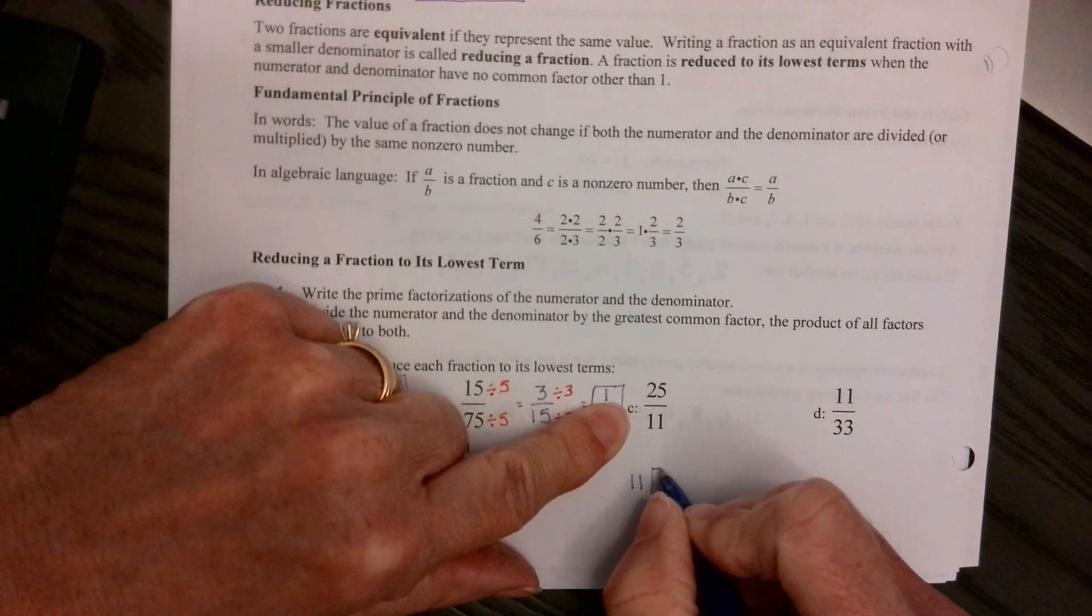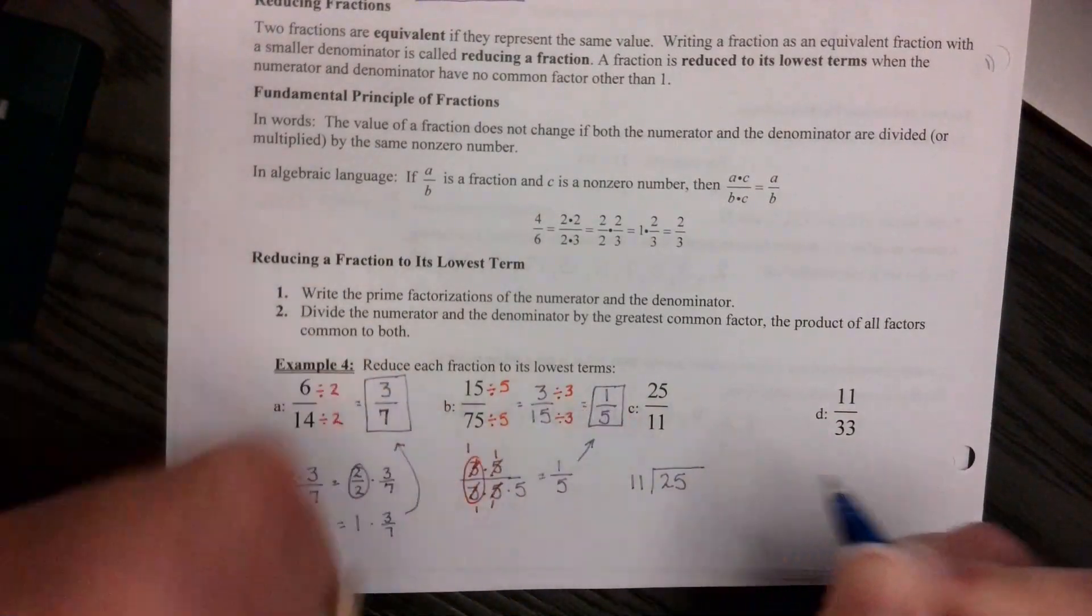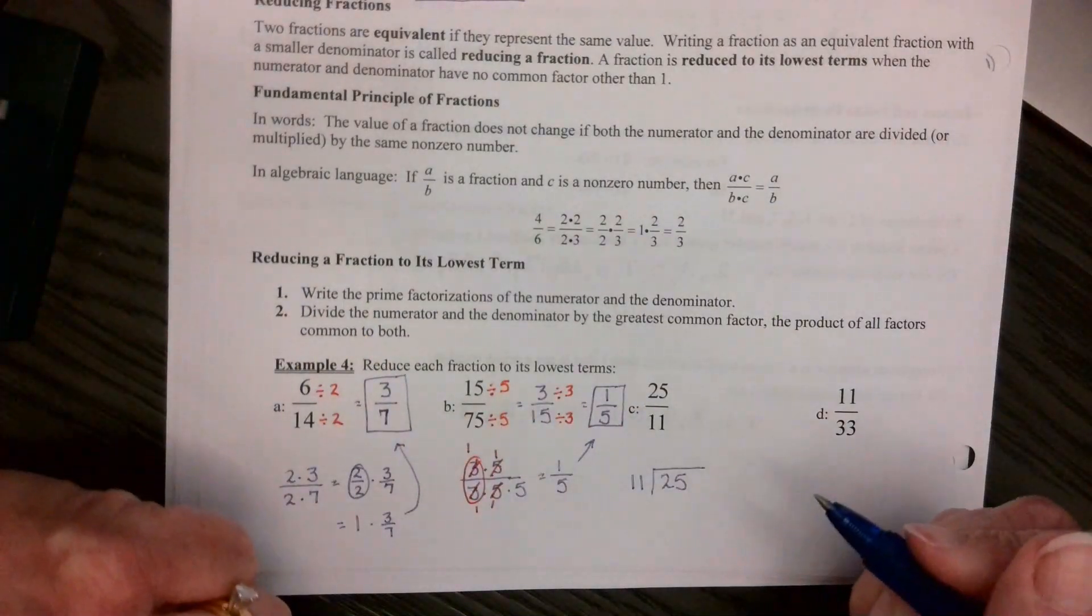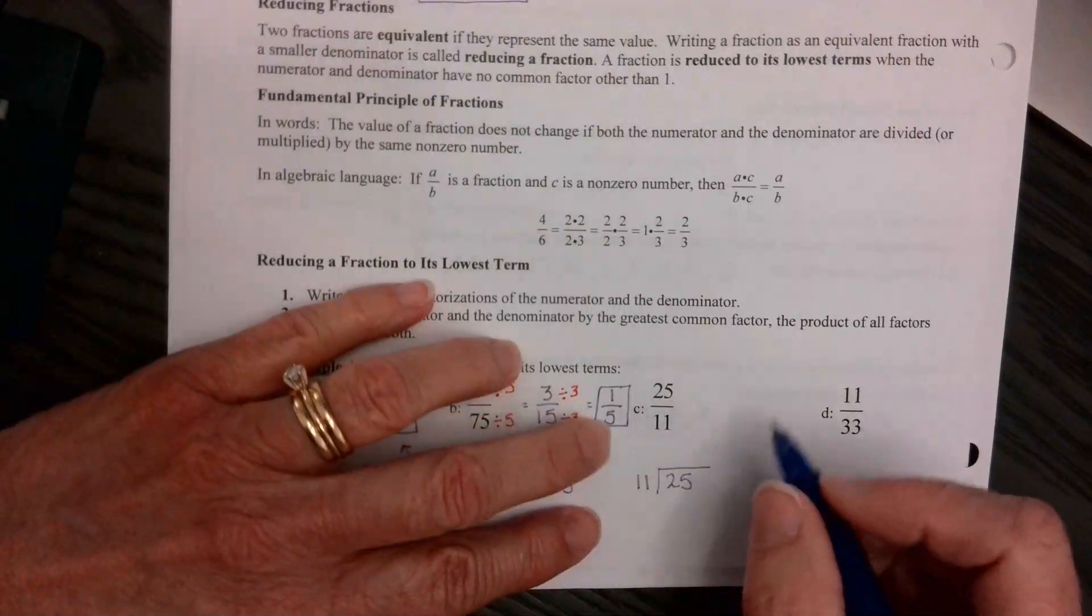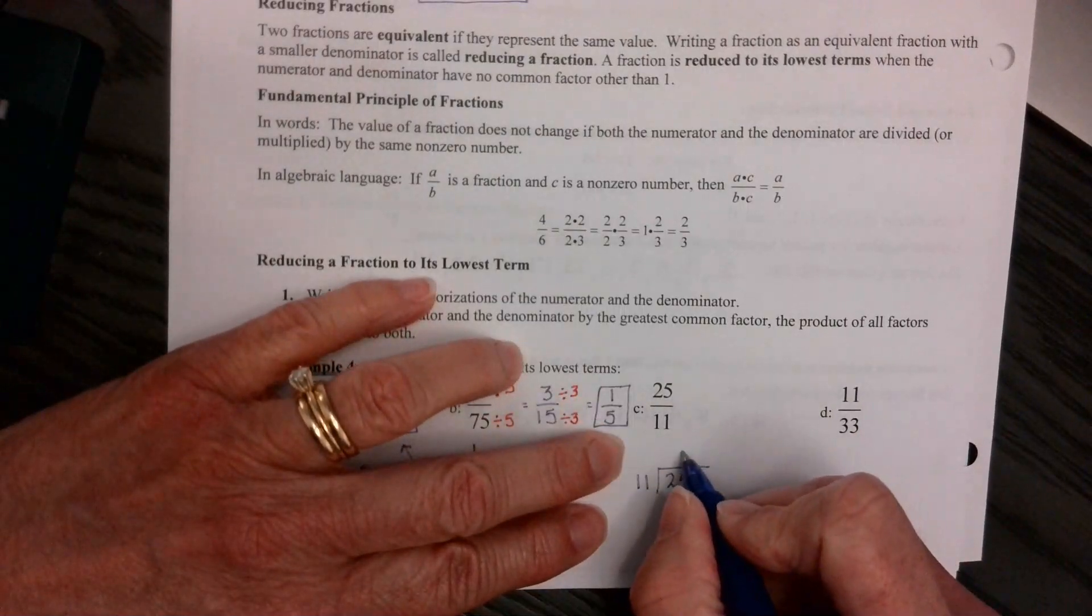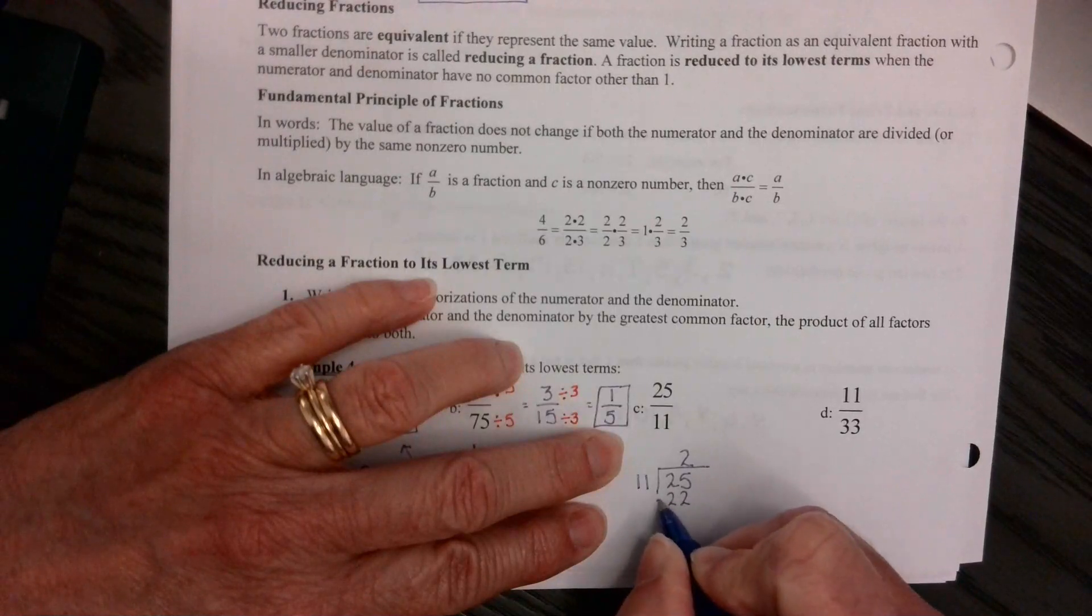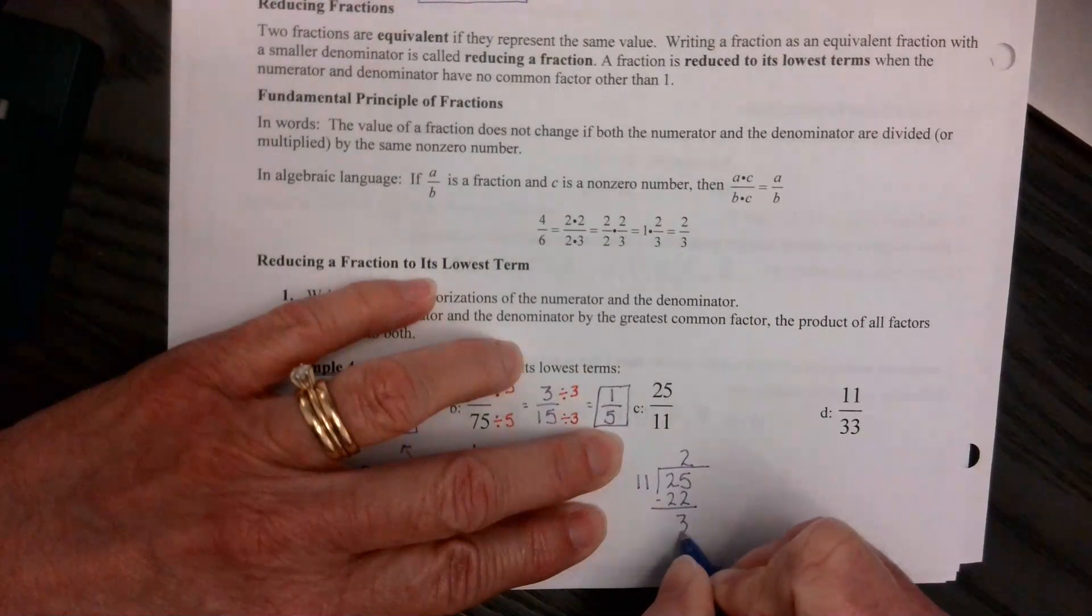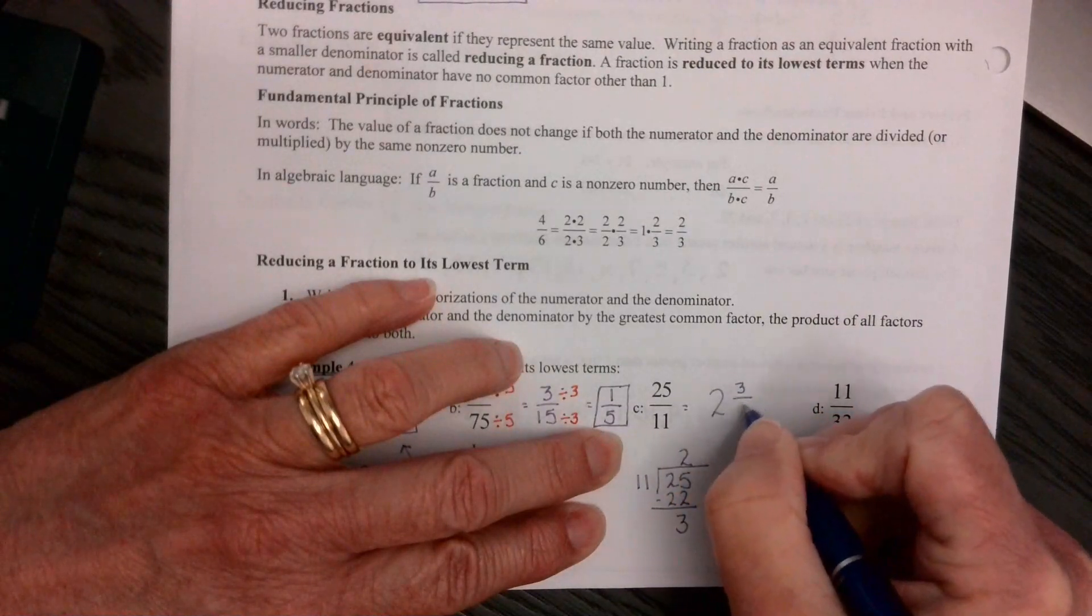But for this section we learned how to change this to a mixed numeral. Because it's improper, the numerator is bigger than the denominator. 11 goes into 25 two times. 2 times 11 is 22. Subtract and get 3. So it is 2 and 3/11.